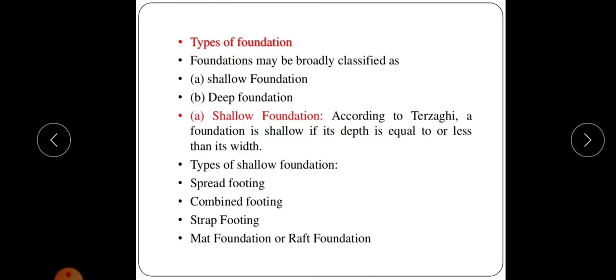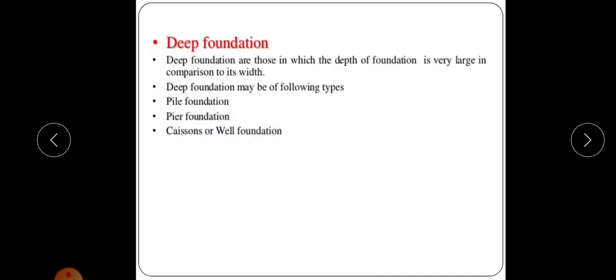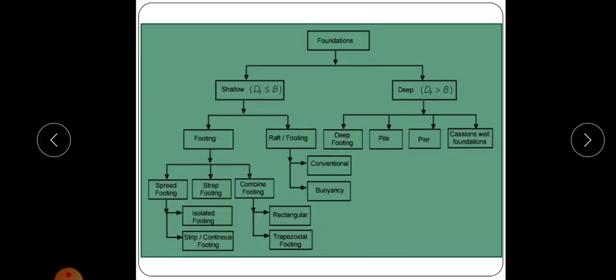Examples of shallow foundations are spread footing, combined footing, strap footing, and mat foundation or raft foundation. Deep foundation means the foundation in which the depth is very large in comparison to its width, and the examples are pile foundation, pier foundation, caissons, and well foundation. This is the classification of foundation based on depth and width.